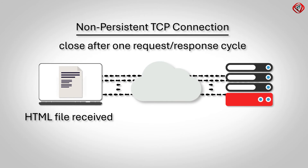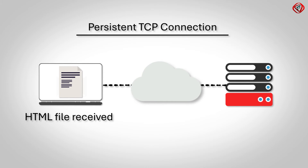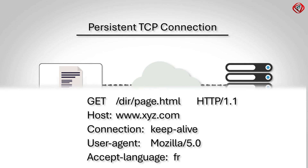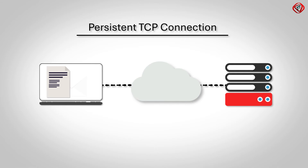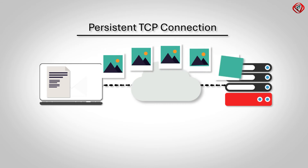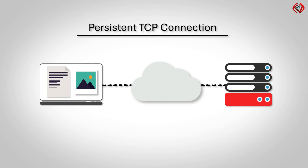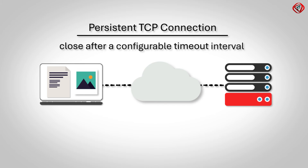In persistent TCP connections, the web server keeps the TCP connection open after sharing the HTML file. Since the 10 images lie on the same server, they are received from the web server over the same TCP connection. There is no need to open 10 separate TCP connections. The web server closes the TCP connection after a configurable timeout interval.